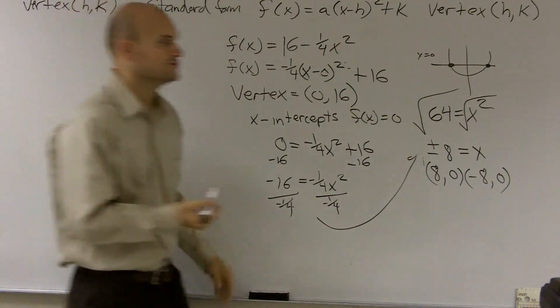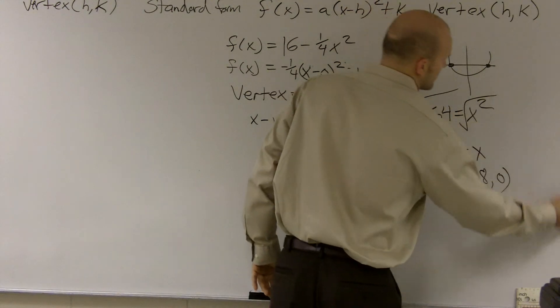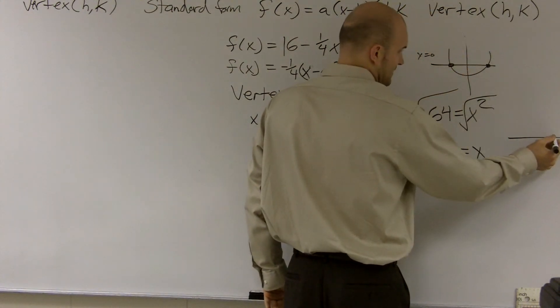So now what we have is we have three points that we can use to graph this. We have negative eight and eight.